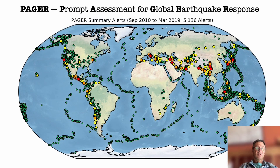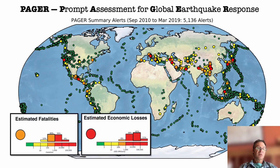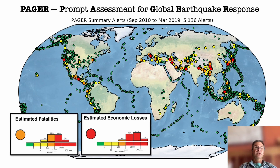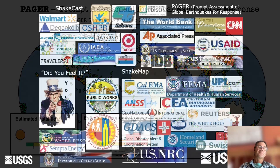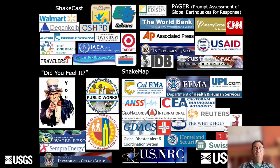The PAGER system puts out estimates of fatalities and economic losses. Communicating these uncertainties is very challenging, but we've developed a simple way of portraying that — which is important because we have a wide variety of users trying to digest this information. Any conversation about these products requires understanding who is using them and for what purposes.